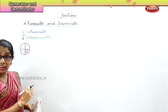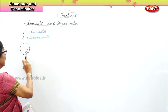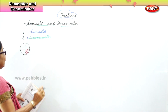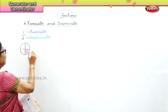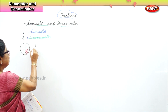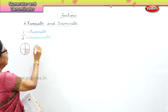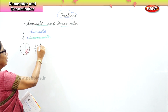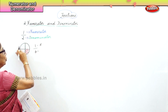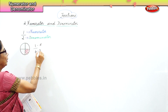We have divided the circle into four parts and colored one portion, so we write it as 1 by 4. The 1 colored portion is the numerator, and 4 — the number of parts it is divided into — is the denominator.